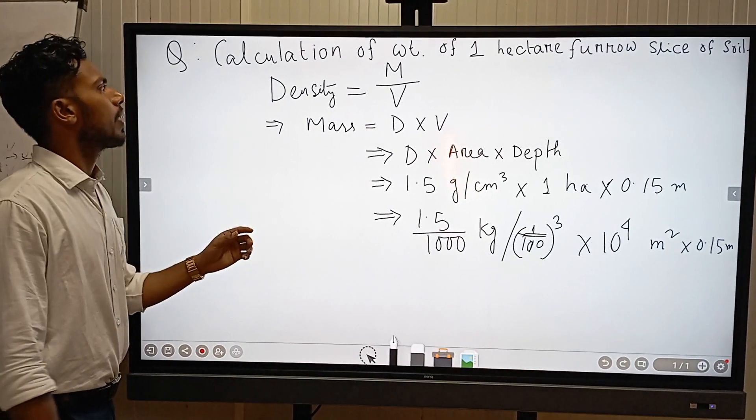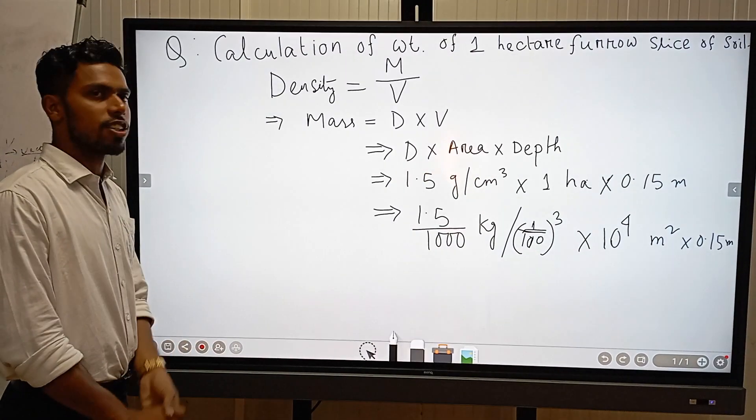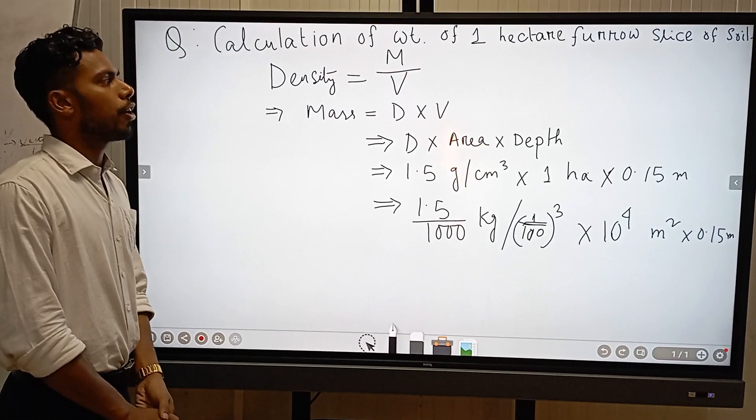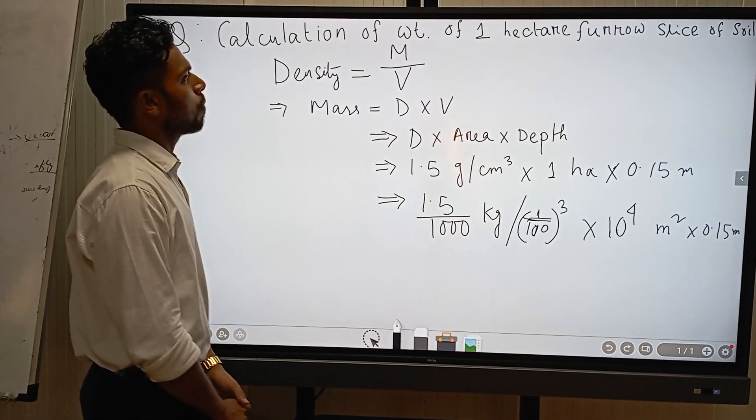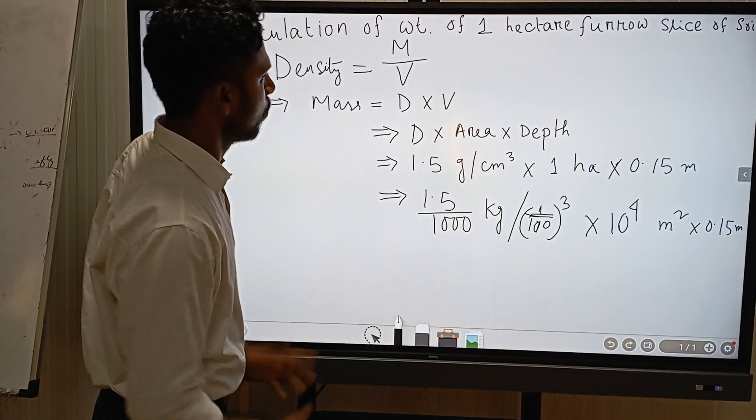As we know, density is equal to mass per unit volume. So mass is equal to density times volume.